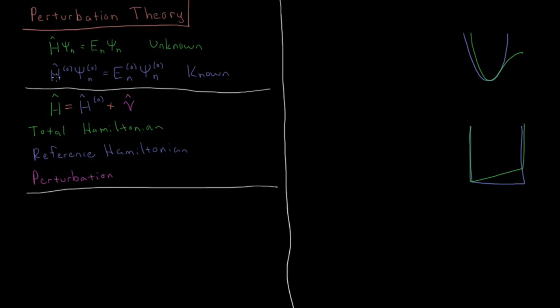But what we do know is a reference system which looks kind of close to this system. So maybe the Hamiltonian is just a little bit different. And we have this reference system where H0 psi0 equals E0 psi0. And the less difference there is between these two systems, the smaller the perturbation is, the better the result we can get using perturbation theory.